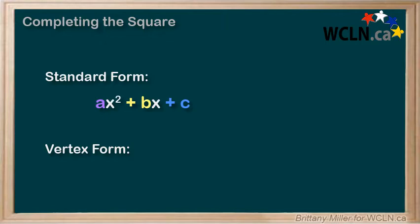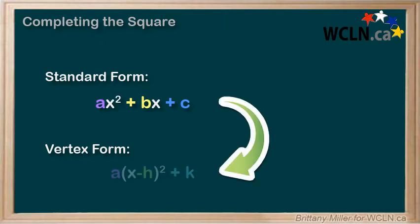We're finally going to learn how to take an equation in standard form and put it into vertex form. That means we have ax squared plus bx plus c and we want it to look like a times x minus h squared plus k. This is a process called completing the square and it goes like this.